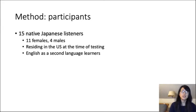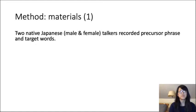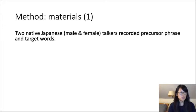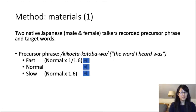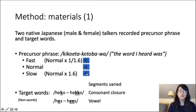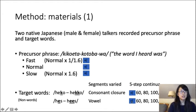In the current study, we recruited 15 native Japanese listeners residing in the U.S. at the time of testing. Two native Japanese talkers — one male and one female — recorded a precursor phrase and target words. The precursor phrase was 聞こえた言葉は, meaning 'the word I heard was,' recorded at normal, fast, and slow rates. Target words were non-words in Japanese, with the varied segment — consonant closure or vowel — manipulated into five-step continua from short (60 ms) to long (140 ms) duration.